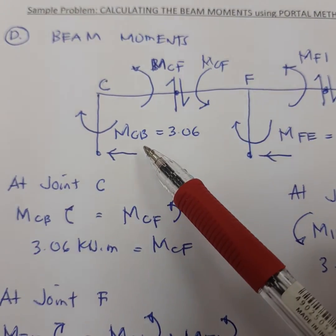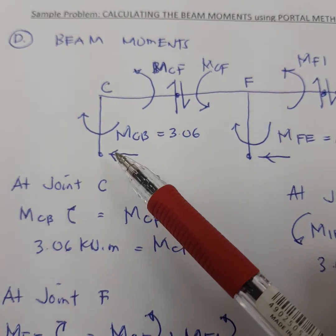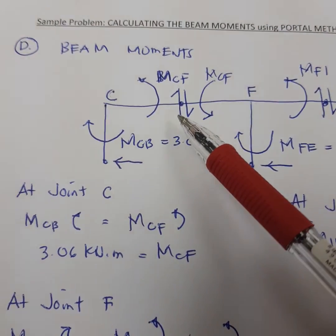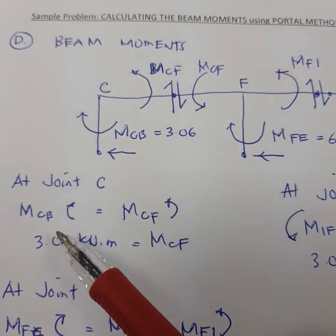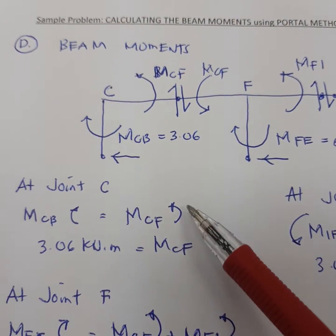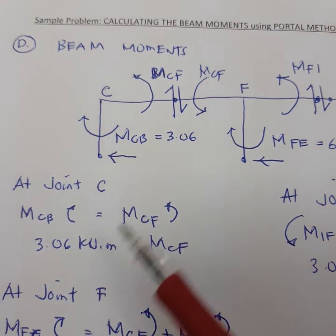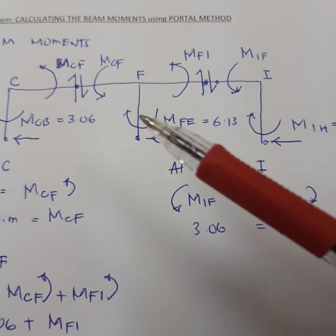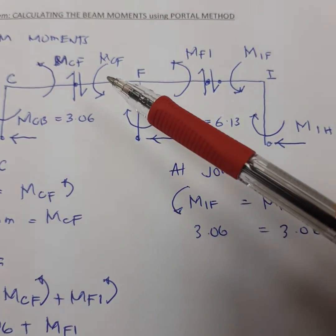The moments that you have computed earlier is in this direction because of this one going towards C, that is clockwise. In this one is opposite direction, counterclockwise. At joint C you have this direction equal to the opposing direction. So you have the moment here 3.06, in other words that would be the same with MCF. The same method you're going to use for joint F, CF is equal to FC.